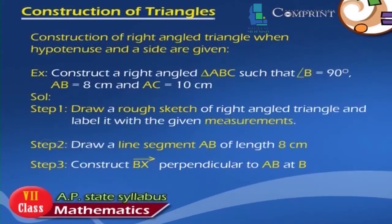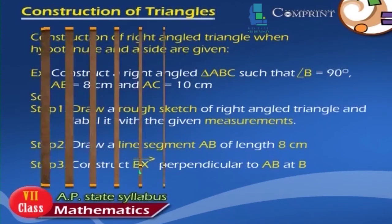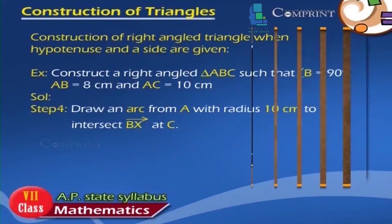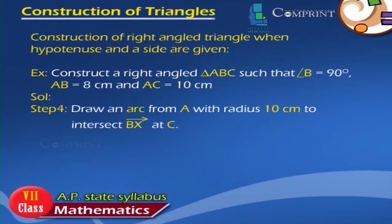Step 3: Construct BX perpendicular to AB at B. Step 4: Draw an arc from A with radius 10 cm to intersect BX at C.